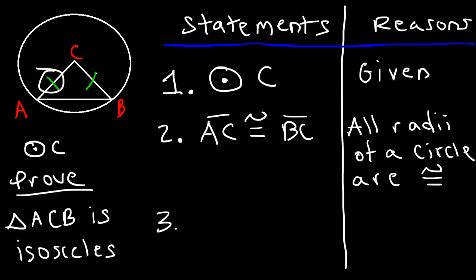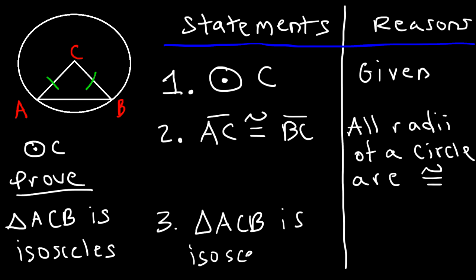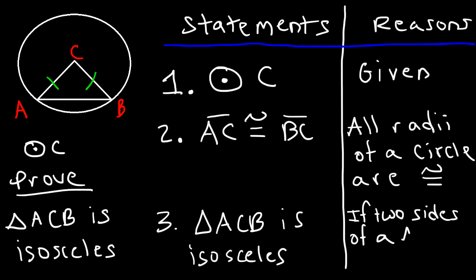Because we have a triangle where two sides are the same, we can now say that triangle ACB is isosceles. The reason in the second column: if two sides of a triangle are congruent, then the triangle is isosceles. That's how you prove that this particular triangle is an isosceles triangle.